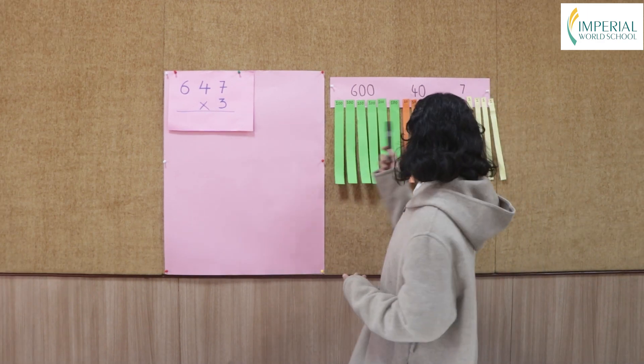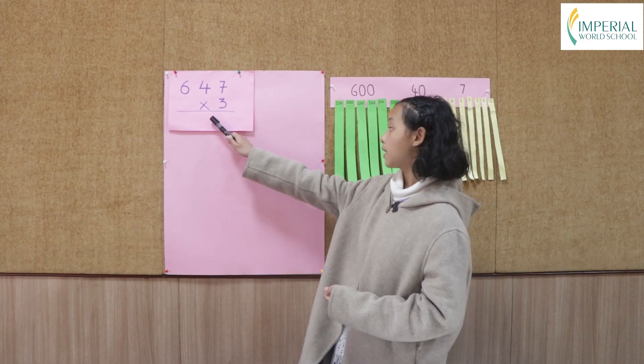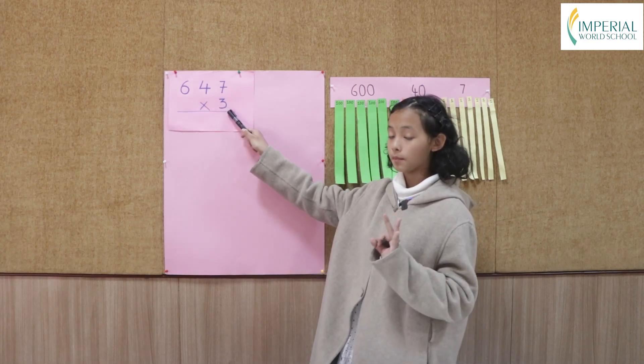Now since we have all these numbers, we're multiplying with the number 3, so I'm going to take 3 long papers.